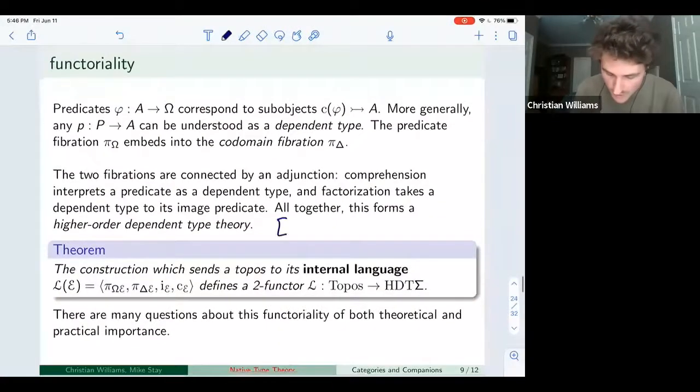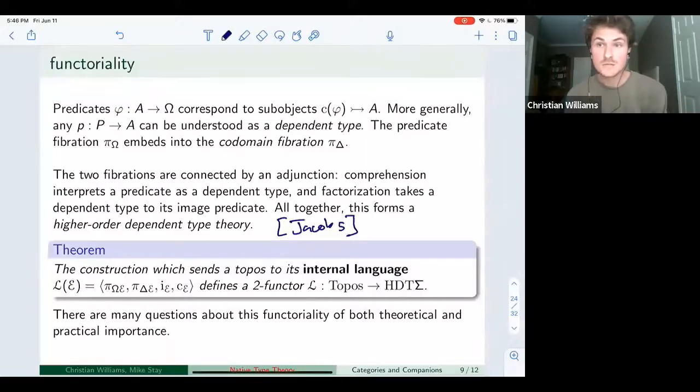But the point is that altogether, this forms what is called the higher order dependent type theory. So if you want to learn more about this stuff, it's all in Jacobs' big book called Categorical Logic and Type Theory. It's definitely not an easy read, but it's the most comprehensive reference about all of this stuff. So we take a theory and we take presheaves on it. And then we consider this pair of fibrations that thinks about predicates on those presheaves and dependent types on those presheaves. And that's it. That's the whole construction.